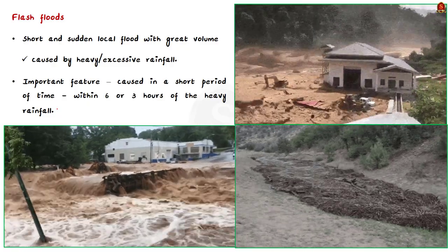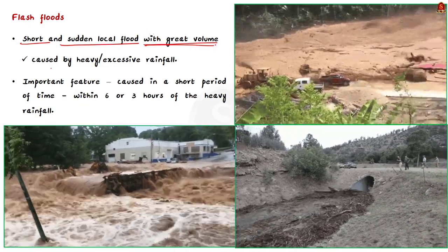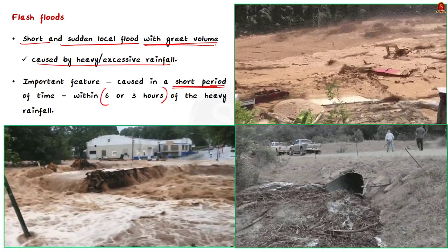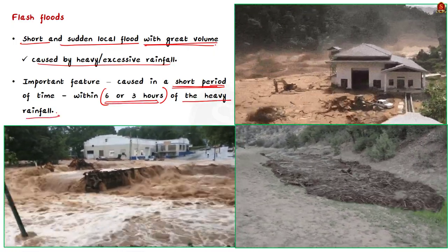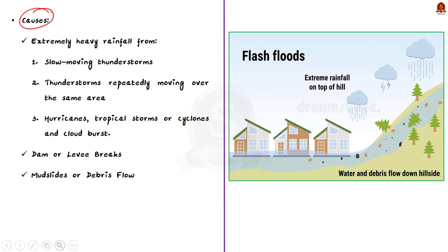Flash floods are short, sudden, local floods with great volume caused by heavy or excessive rainfall - occurring in a very short period of time. Flooding that begins within 6 hours, and often within 3 hours, of heavy rainfall is called a flash flood. Extremely heavy rainfall from thunderstorms is the main cause. Other causes include slow-moving thunderstorms, thunderstorms repeatedly moving over the same area, heavy rains from hurricanes, tropical storms, cyclones, and cloudbursts. Flash floods can also be caused by dam breaks, levee breaks, mudslides, or debris flow.